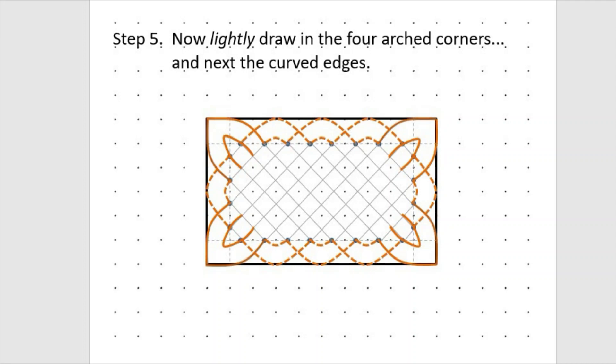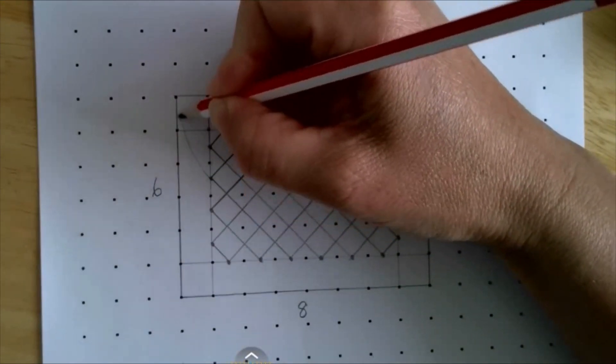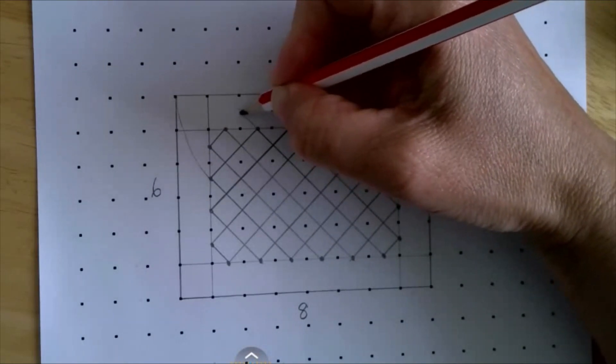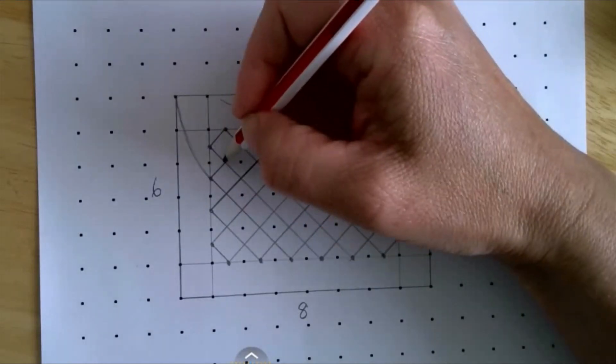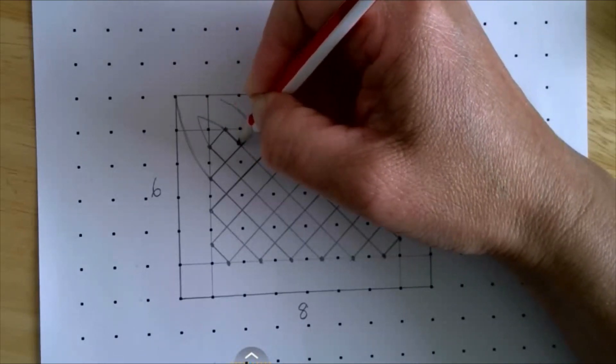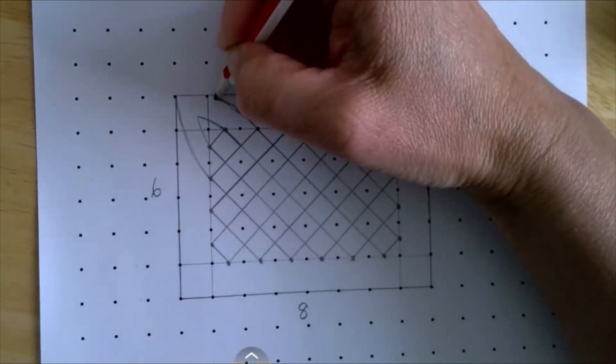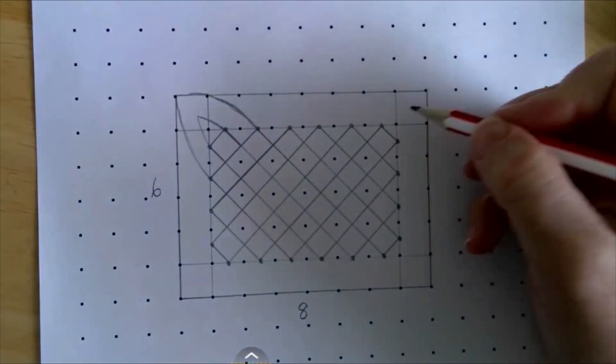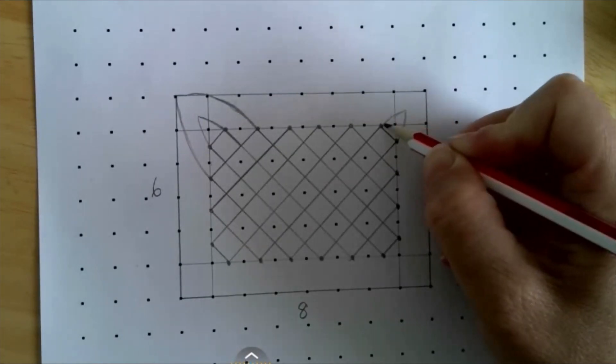Next step is to now lightly draw in four arched corners, and next to the curved edges. I'm going to start with the corners. I'm just going to lightly sketch in my edges. I'm going to pause the video, and I'll do each of my edges now.